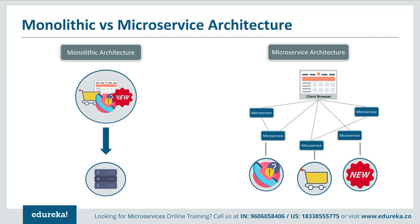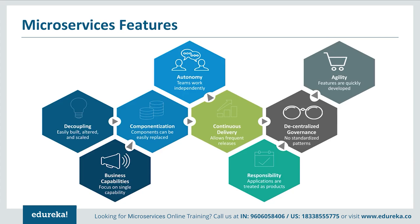In summary, monolithic architecture had a single framework for all features on a single database, whereas microservice architecture has different microservices for each feature, each handling its own database. Features that made developers shift to microservices include: applications are easily built, altered, and scaled; they focus on a single capability; all components can be easily replaced; teams work independently; frequent software releases are allowed; applications are treated as products; there are no standardized patterns; and all features are quickly developed.